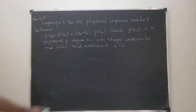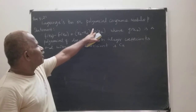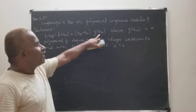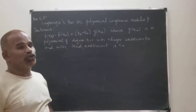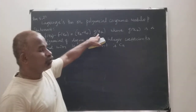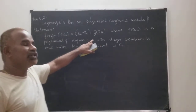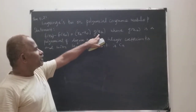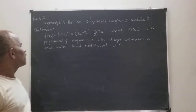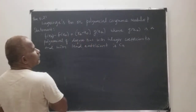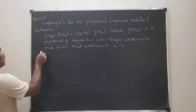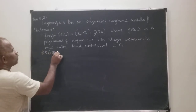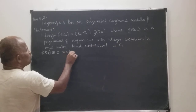So this polynomial has at most how many solutions? Definitely n minus 1 solutions, because we have assumed that any polynomial congruence has at most n minus 1 solutions. Now, F of xk is congruent to 0 mod P.